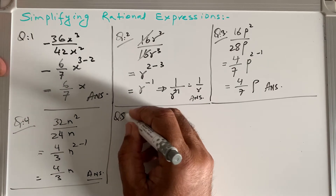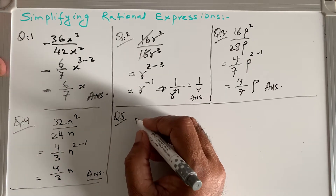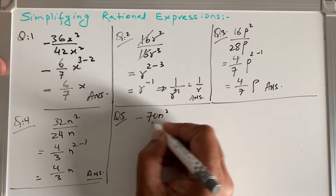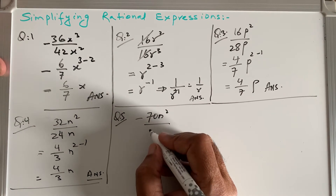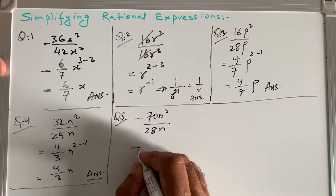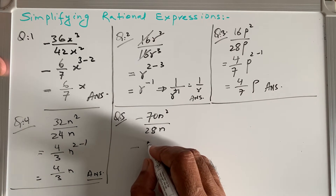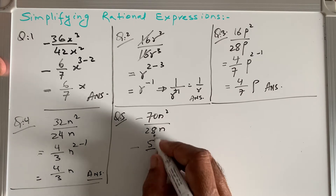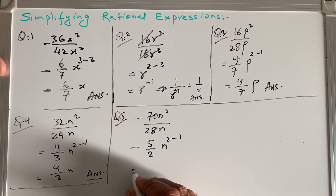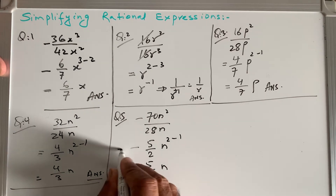Question 5: (70 - 70n²) / 28n. Using the 14 times table: 14 × 5 = 70 and 14 × 2 = 28. For the exponent on n: 2 - 1 = 1, so we have n. The simplified answer is 5(1 - n²)/2n — factoring out 14 gives 5(1-n)/2 after cancellation.